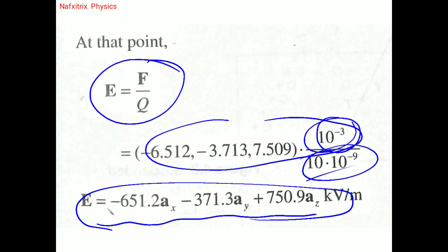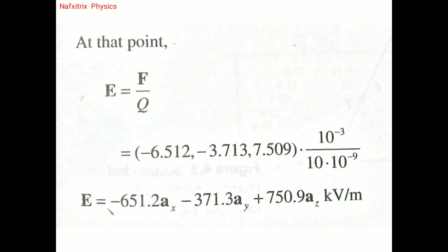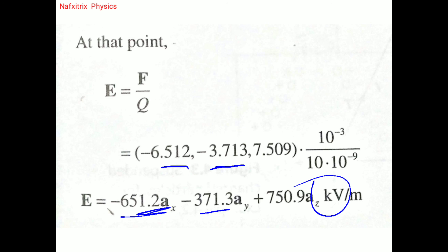Simplifying: 10⁻³ divided by 10⁻⁸ gives 10⁵. Multiplying the components inside by 10² gives values like 651.2 and −371.3, and the factor of 10³ corresponds to kilo. This gives the final electric field intensity vector in kV/m, completing the solution for both force and field intensity.